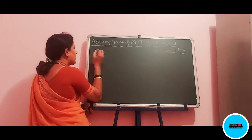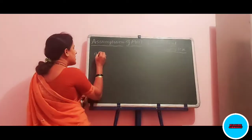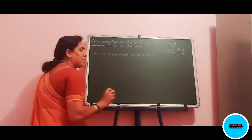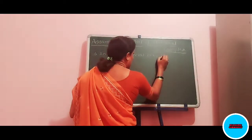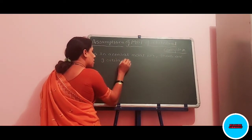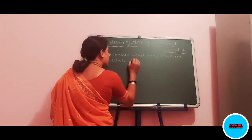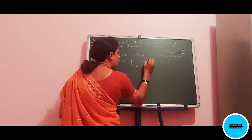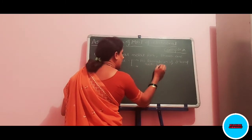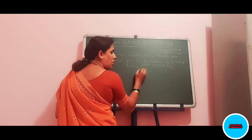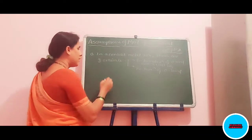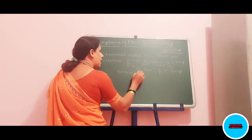Let us see the first assumption. In the formation of MOT, in an octahedral complex, the central metal ion has a total of nine orbitals. These nine orbitals can be classified as those used for the formation of sigma bonds with the ligand and metal ion, and those used for the formation of pi bonds with the ligand and central metal ion.